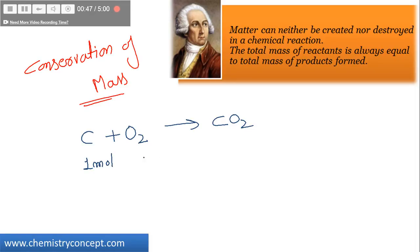The mass of carbon is 12 grams, mass of oxygen is 32 grams. 12 plus 32 is equal to 44 grams, which is the mass of product formed. I have taken 12 grams of carbon and 32 grams of oxygen, collectively 44 grams.